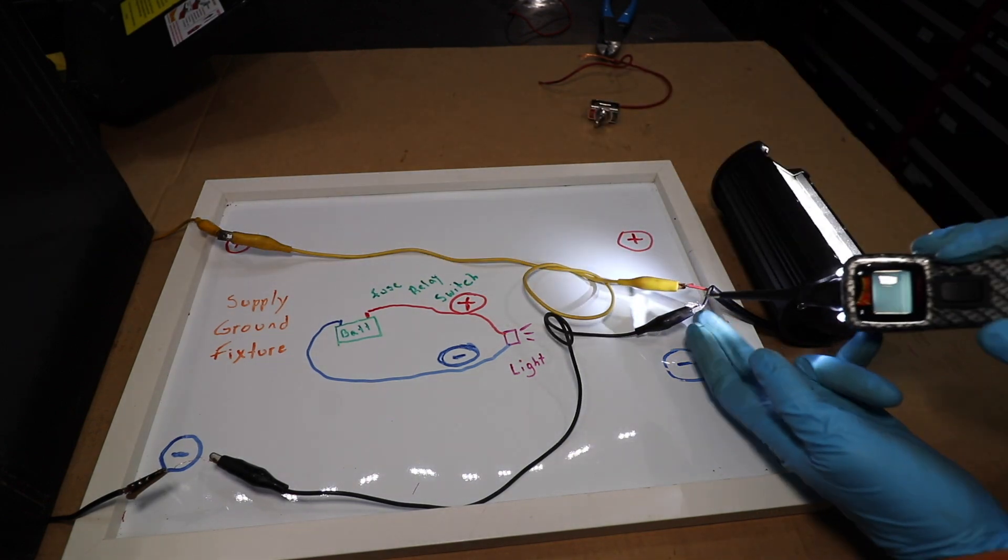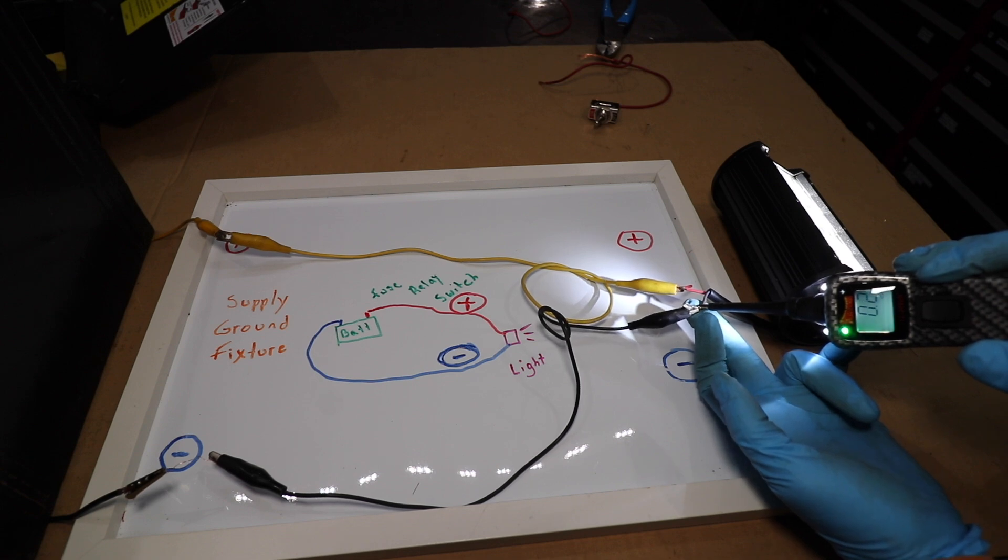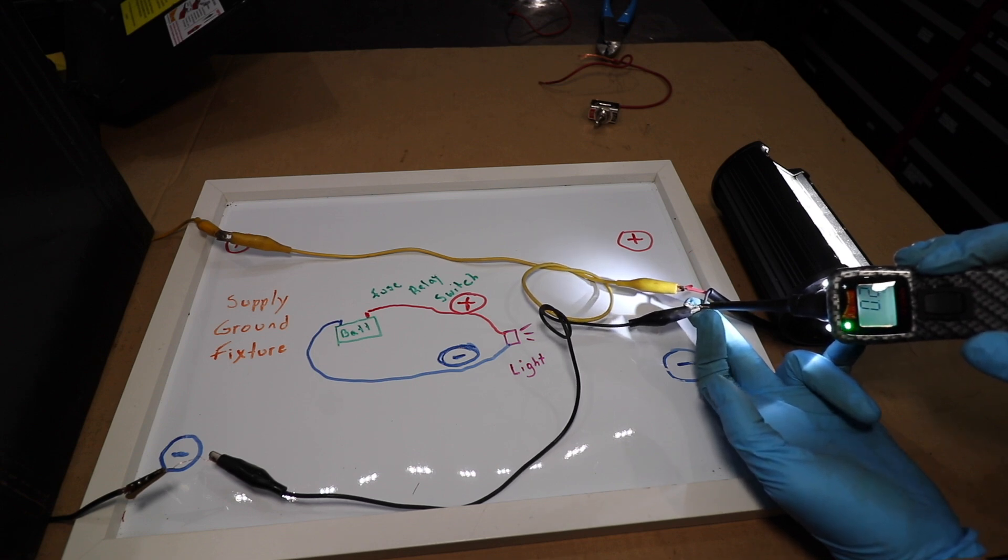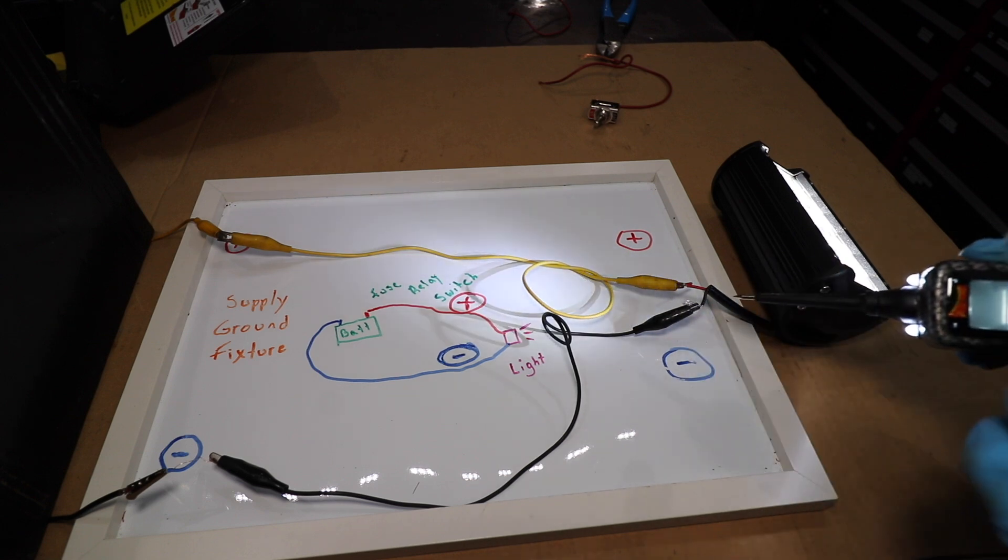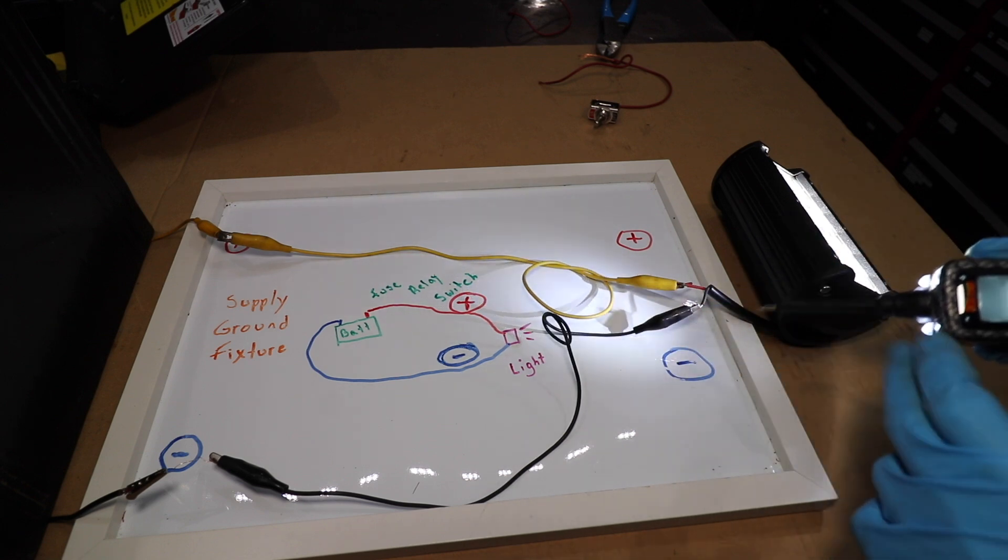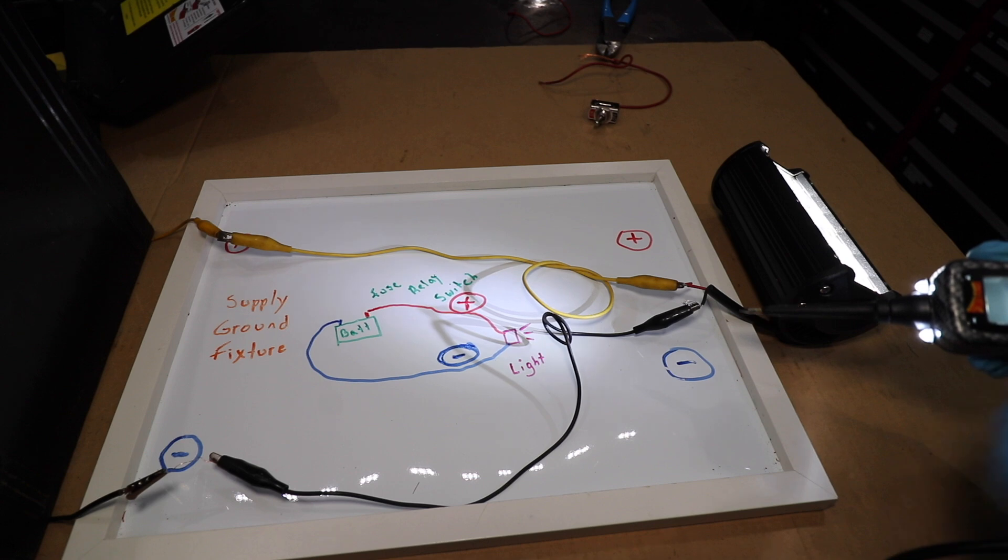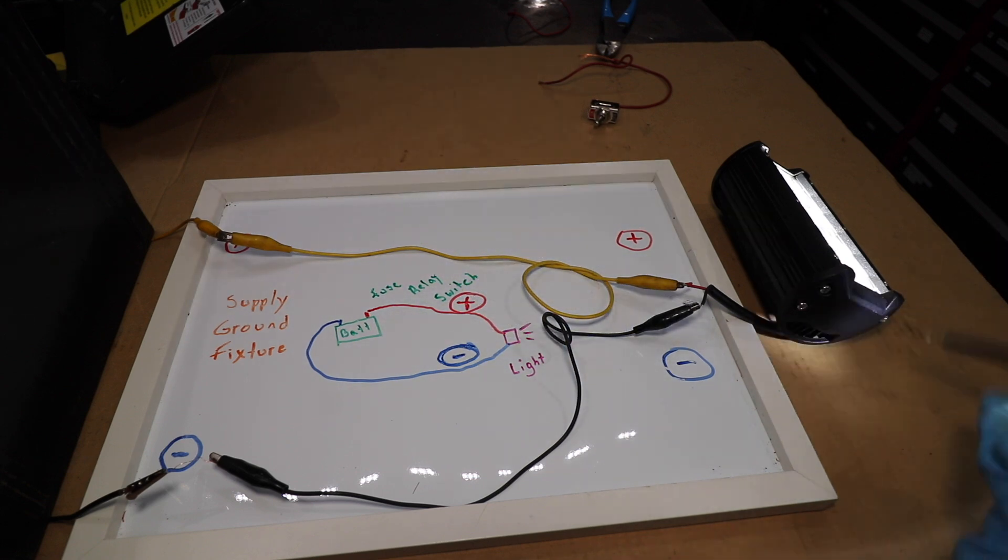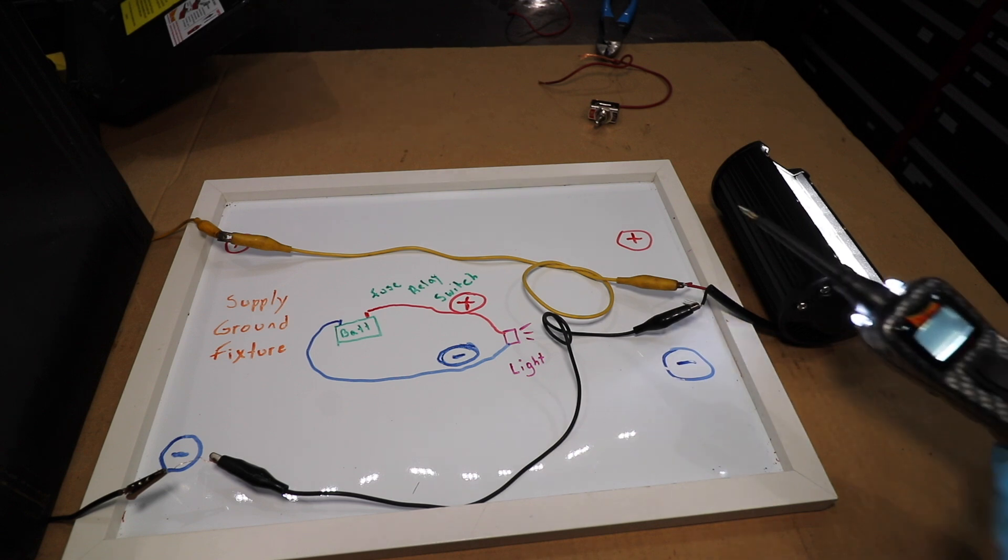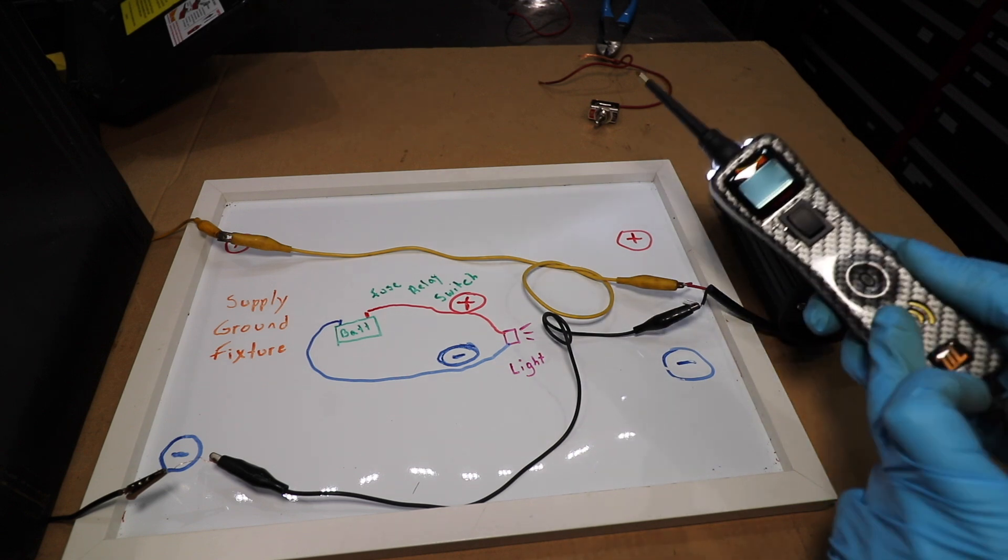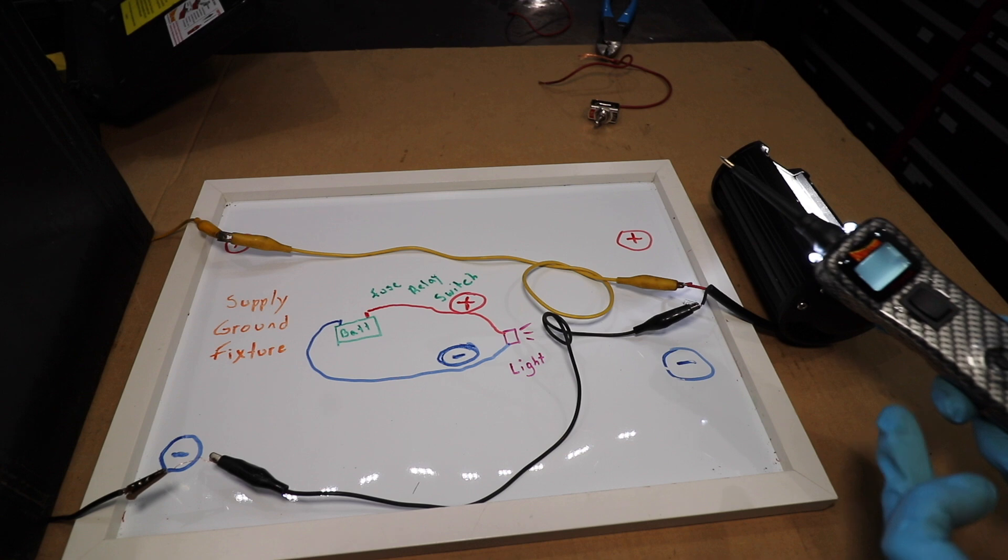Now let's probe the ground wire coming out of the fixture. So you can hear it's bouncing around a lot more than the positive side, which to me indicates that the issue more likely is on the grounding side. So we have some type of electrical issue, most likely a corroded wire, bad contacts, something of that nature. Unlikely that it's the fixture because the fixture appears to be pretty well illuminated right now.